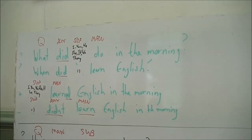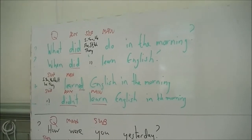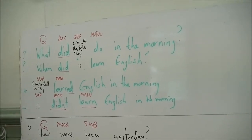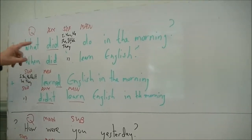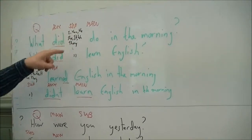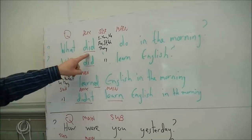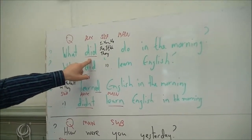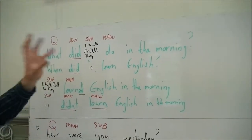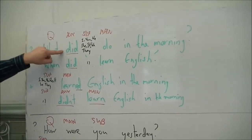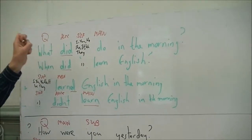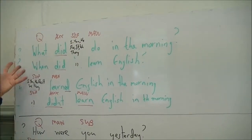We then took the same questions, the same positive and negative sentences, and put them in the past. We realised it's even easier than present simple. 'What did I, you, he, she, it, we, or they do in the morning?' It doesn't matter what subject you're using — the auxiliary verb is going to be the same in the past. The main verb follows the same rule: because you're using an auxiliary verb, the main verb is always present simple first person. It's just the one auxiliary verb — we don't have to play about with it.